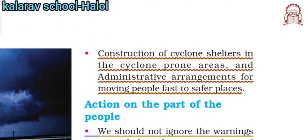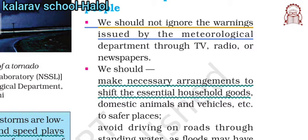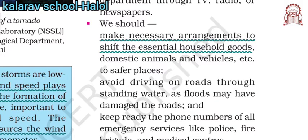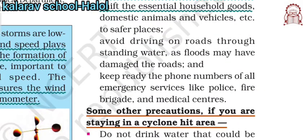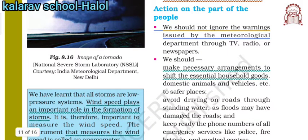Construction of cyclone shelters in cyclone-prone areas is done by administrative arrangement to move people to safer places. As for action on the part of the people: do not ignore warnings issued by the meteorological department, which can be seen through TV, radio, or news media. Make necessary arrangements to shift essential goods, domestic animals, and vehicles to safer places. Avoid driving on roads through standing water. Keep phone numbers of all emergency services like police, fire brigade, and medical centers ready.